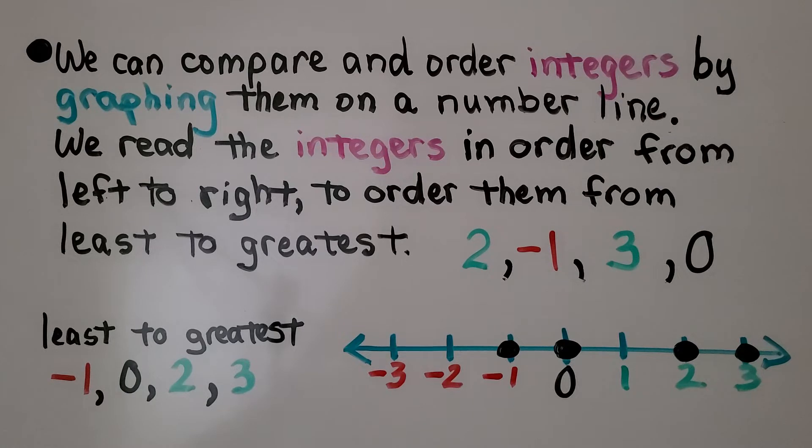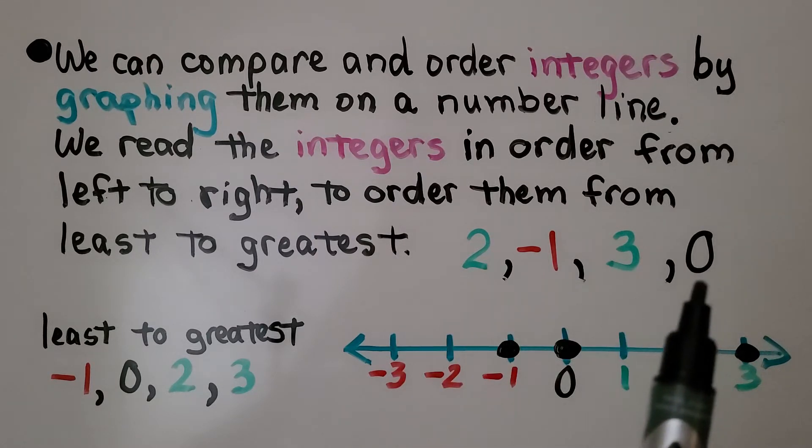We can compare and order integers by graphing them on a number line. We read the integers in order from left to right to order them from least to greatest. The numbers we're given are 2, negative 1, 3, and 0.